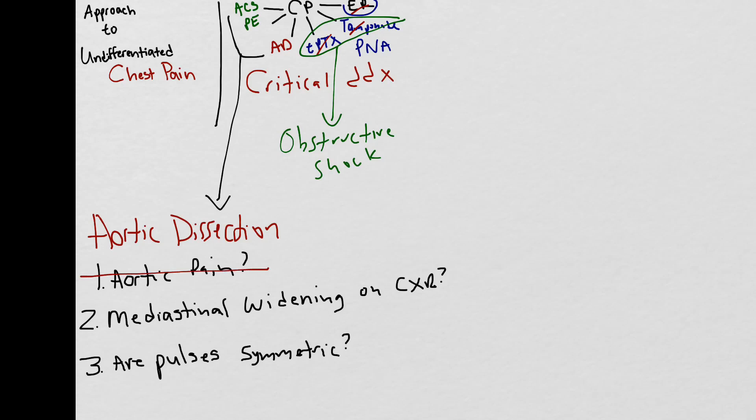If you don't have aortic-type pain, the mediastinum is normal on chest x-ray, the pulses are symmetric throughout, and an alternative diagnosis is more likely, you've effectively ruled out aortic dissection. On the flip side, if your patient mentions one of the three things we listed, or if they're critically ill without a clear diagnosis, you may want to think about aortic dissection as a possible etiology for the chest pain.